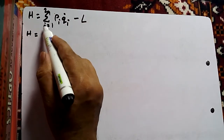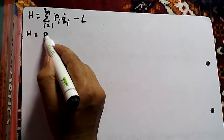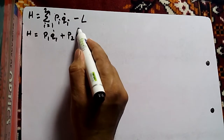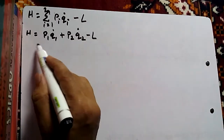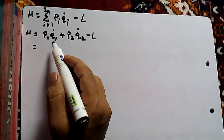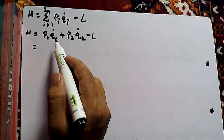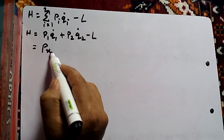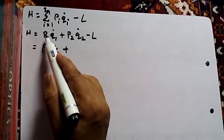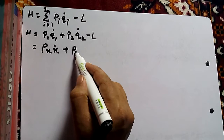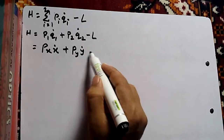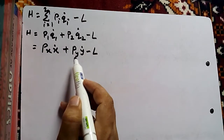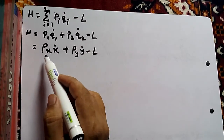Expanding the summation, we have P1 Q1-dot plus P2 Q2-dot minus L. Since in our problem there is no Q1-dot but there is X-dot, we convert it: P1 becomes Px and Q1-dot becomes X-dot, plus Py into Y-dot, minus L. These are the standard notations converted into the notations required by our problem.